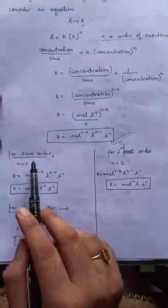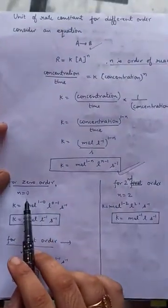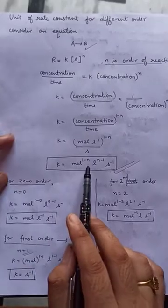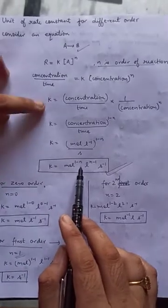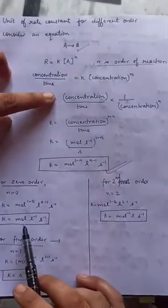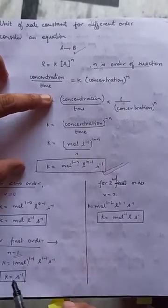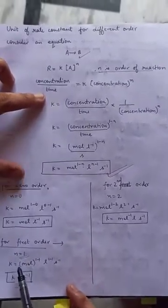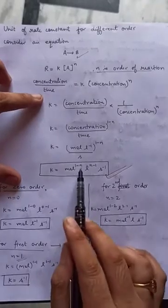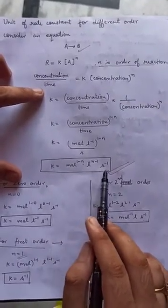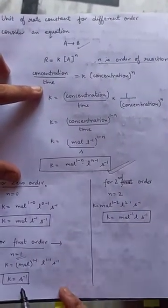Now for zero order, N will be equal to 0. On putting the value of N equals 0 in this expression, K is mole, liter inverse, second inverse. Now for first order, N will be equal to 1. So mole 1 minus 1, liter 1 minus 1, second inverse. So it will be second inverse.